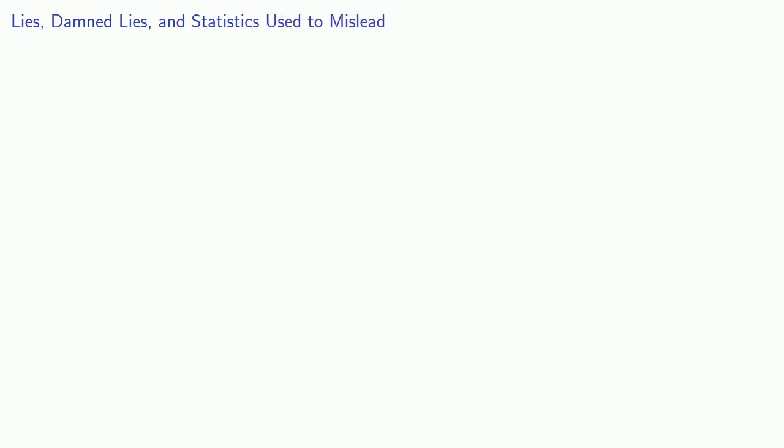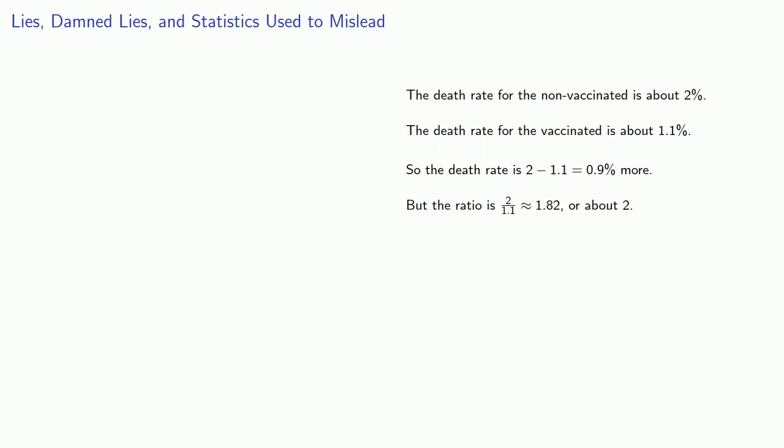And here's the important thing. We know two things from our data: the death rate for the non-vaccinated is about 2%, and the death rate for the vaccinated is about 1.1%. And so the death rate is 0.9% more. Or the ratio of the death rates, 2 to 1.1, is about 2. Or this death rate among the non-vaccinated is 82% higher.